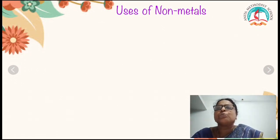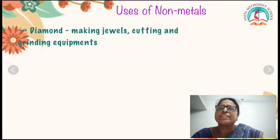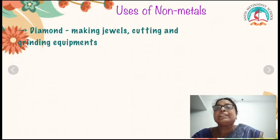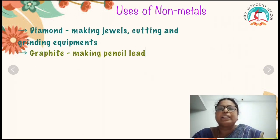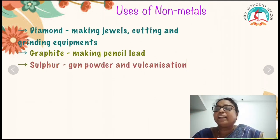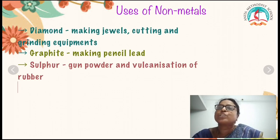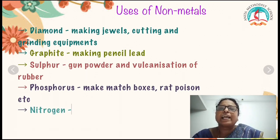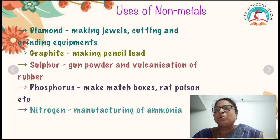Uses of non-metals: diamond is used for making jewels and for cutting and grinding equipment. Graphite is used to make pencil lead — that black color inside the pencil. Sulfur is used in the manufacture of gunpowder and vulcanization of rubber. Phosphorus is used to make matchboxes, rat poison, and more.